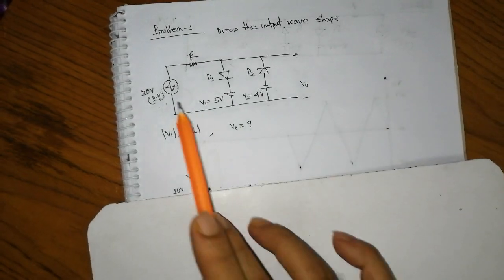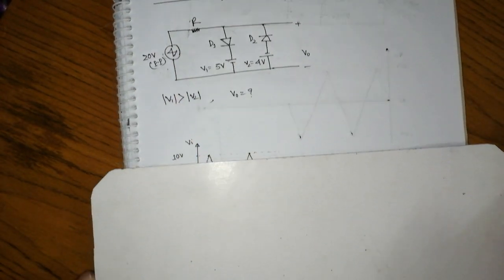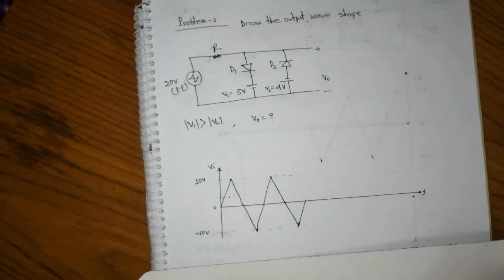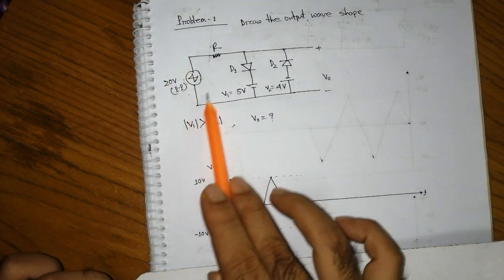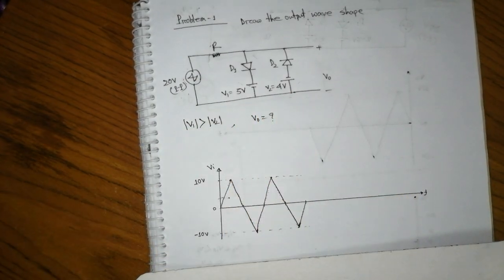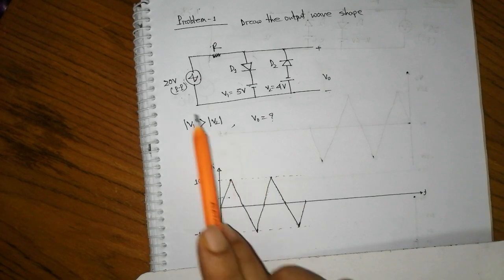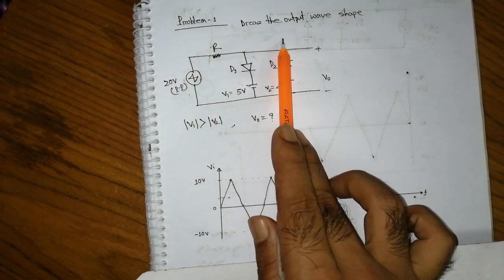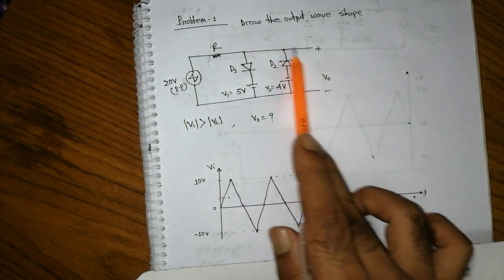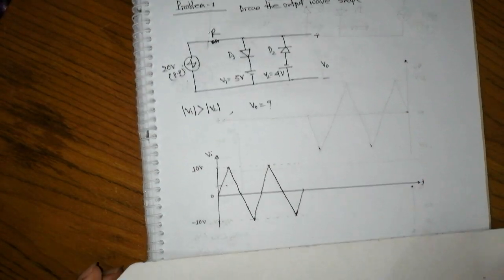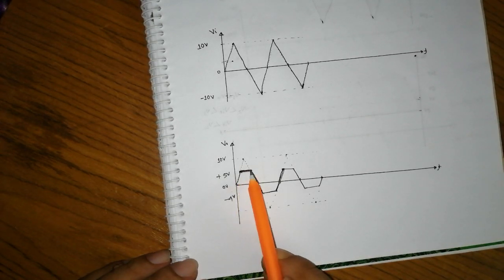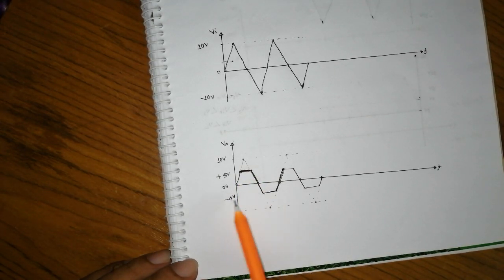The input is a reverse-shape triangle wave. We need to determine the output shape. The output shape is a triangle wave — an inverse shape. For the negative half cycle, we add a condition of minus 4 volts. So the positive half cycle is 5 volts and the negative half cycle is minus 4 volts.